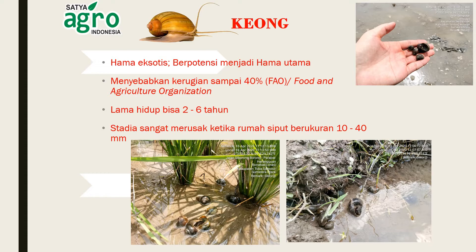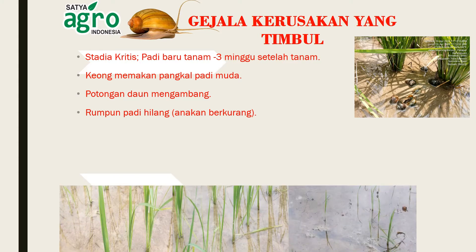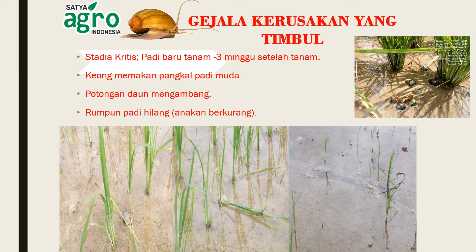Lama hidup keong ini bisa dari 2-6 tahun, dengan stadia sangat merusak ketika rumah siput berukuran 10-40 mm. Gejala kerusakan yang terlihat yaitu yang pertama, stadia kritis; ke-2, keong memakan pangkal padi muda; ke-3, potongan daun mengambang; dan yang ke-4, rumpun padi hilang atau anakan berkurang.